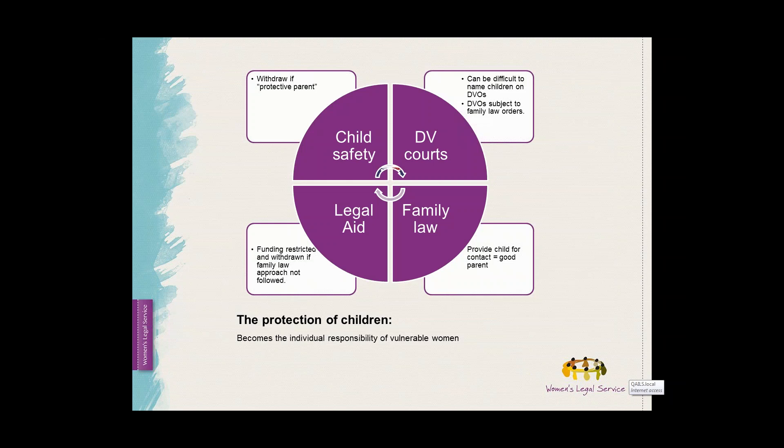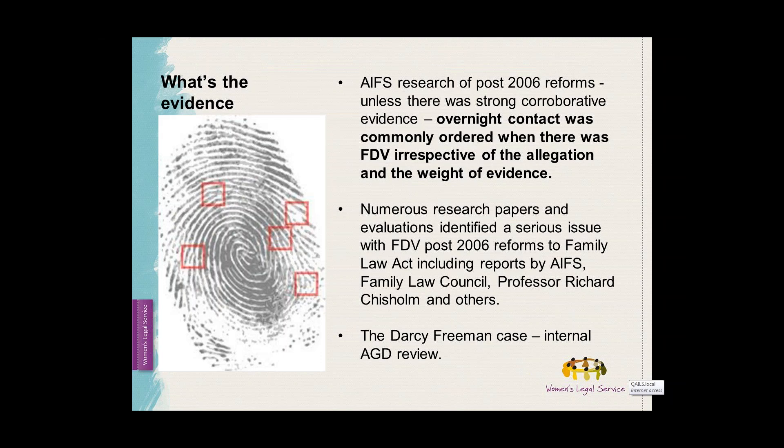There are huge systemic issues that are at play, that result in these agreements — or these possibly unsafe agreements — being either ordered or agreed to. There are issues in relation to domestic violence courts naming children, and in the family law system, it can be argued that providing a child full contact equates to being a good parent. The ACE research post-2006 family law reform showed that overnight contact was commonly ordered by the family law courts when there was domestic violence, irrespective of the allegations and the weight of evidence.